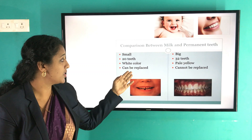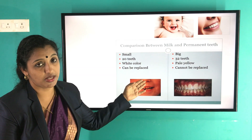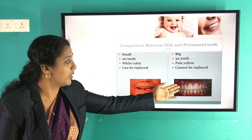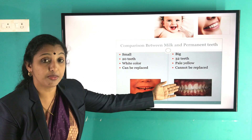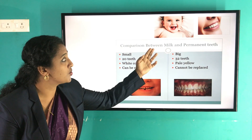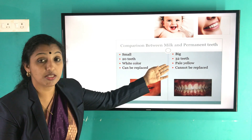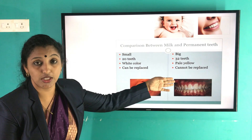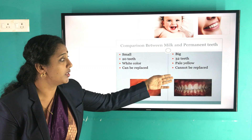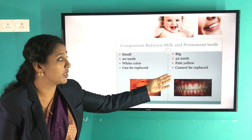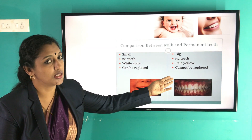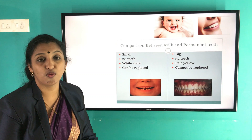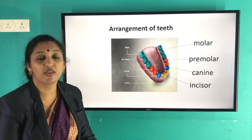Milk teeth are white in color and can be replaced. But permanent teeth are bigger in size, 32 in number, pale yellow in color, and cannot be replaced. Once gone, they're gone.